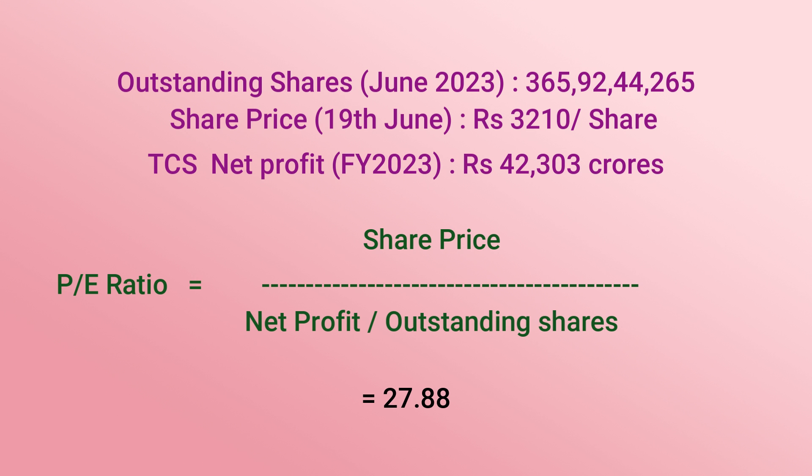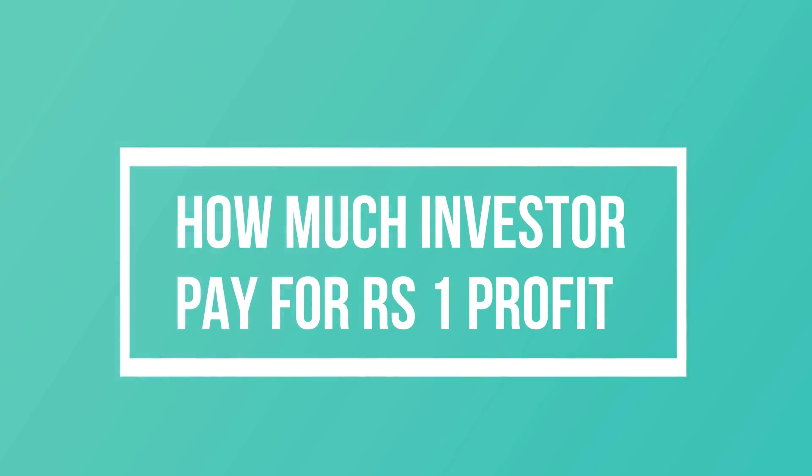The P/E ratio we see on the website is known as the trailing P/E, because we calculate it using historical information. It basically represents how much, as an investor, we are willing to pay per rupee of the company's profits. As of June 19th, for TCS, investors were paying approximately 27.8 times the company's profit. So the trailing P/E helps us understand how much we are paying for the stock at its present value.